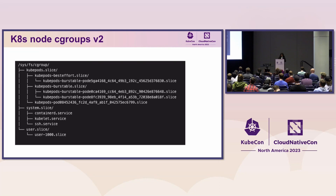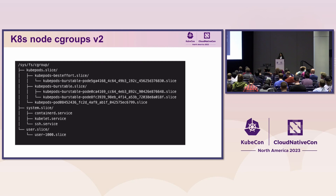What are Cgroups? Cgroups are basically a mechanism that allows processes to be organized hierarchically and resources to be distributed hierarchically in a controlled and configurable manner. Cgroups have two components: the core and the controllers. The core takes responsibility for organizing processes hierarchically, and the controllers take responsibility for distributing resources across those processes in a controlled manner.